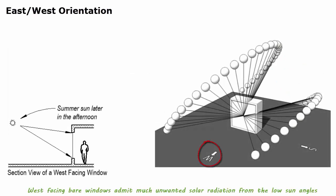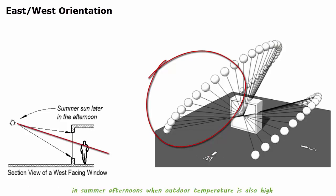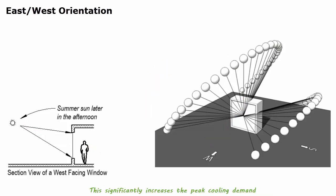West-facing bare windows emit much unwanted solar radiation from the low sun angles in summer afternoons when outdoor temperature is also high. This significantly increases the peak cooling demand.